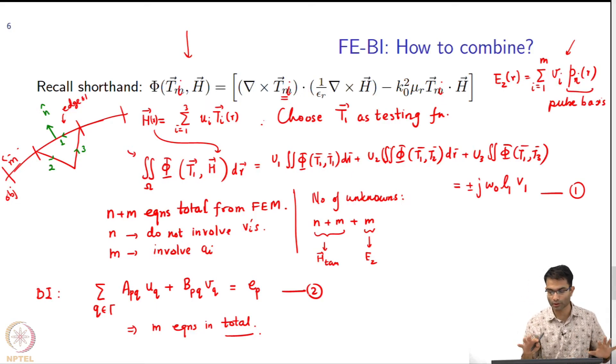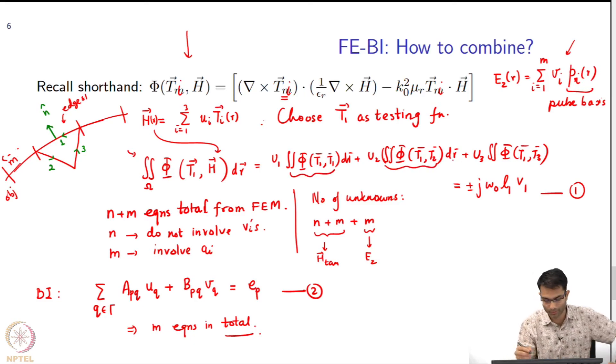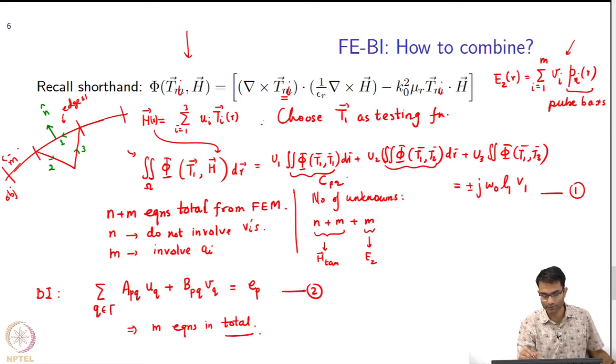Now let us come to the overall matrix equation. This whole thing is just going to be some number — some matrix, you can call it C, whatever, C_pq kind of a thing.